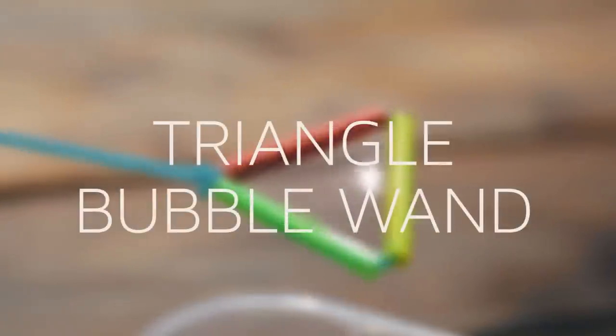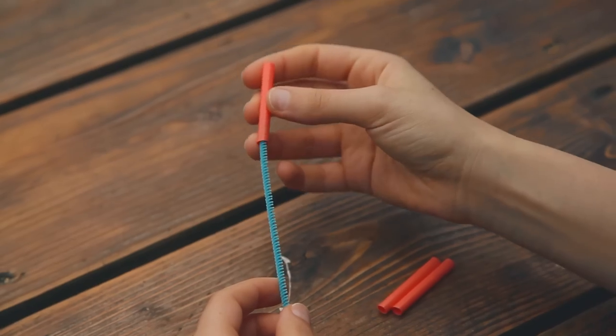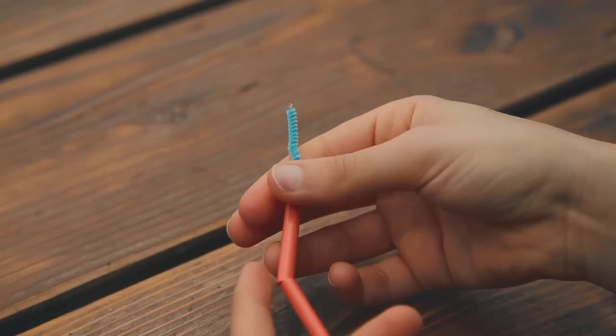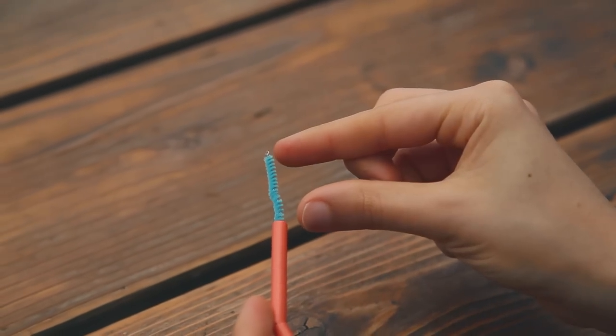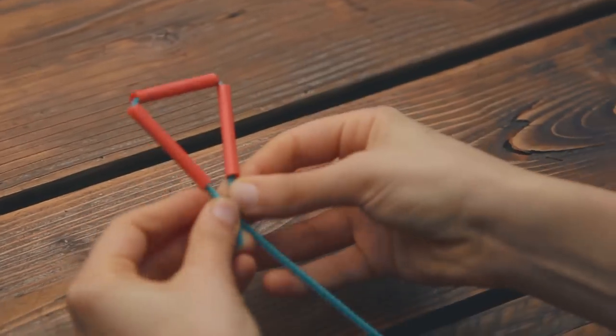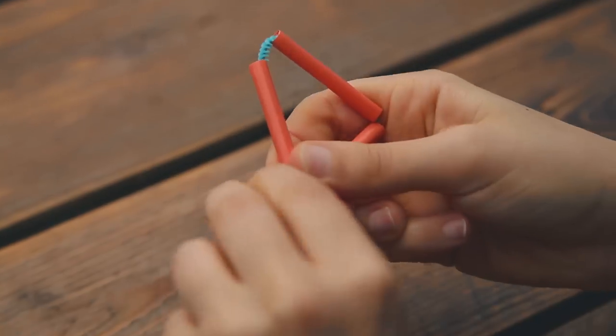Let's get started with the triangle bubble wand. Slide three straw pieces onto the pipe cleaner. Make sure to leave one inch at the top. Then bend your pipe cleaner into a triangle shape and secure the end.